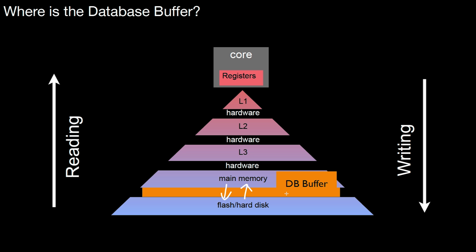The database buffer reads blocks from hard disk into main memory. One important terminology distinction: the blocks on hard disk or on an SSD are called blocks. Once the database buffer reads those blocks, we don't call them blocks anymore, but pages. It's the same data — say an eight-kilobyte block of data — but here we call it a block, and once read into main memory, we call it a page. The same data is called a block on hard disk but a page once it is in main memory.